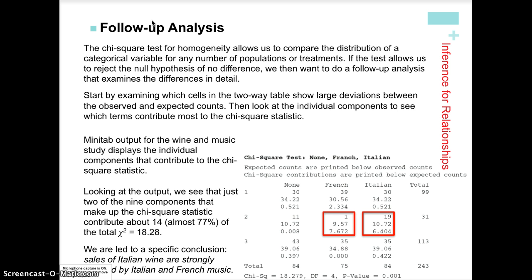On this Minitab output, we do have the chi-square test statistic value, the degrees of freedom listed, and the p-value to three decimal places. When you see computer output like this, you want to be able to read and interpret it, or use it for your conclusion if you're given something like this on a test.